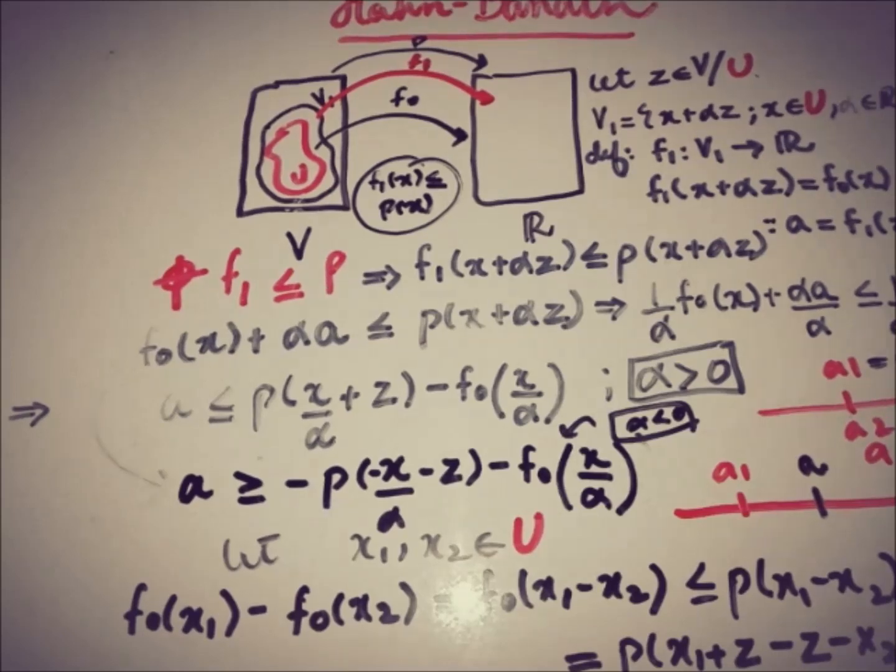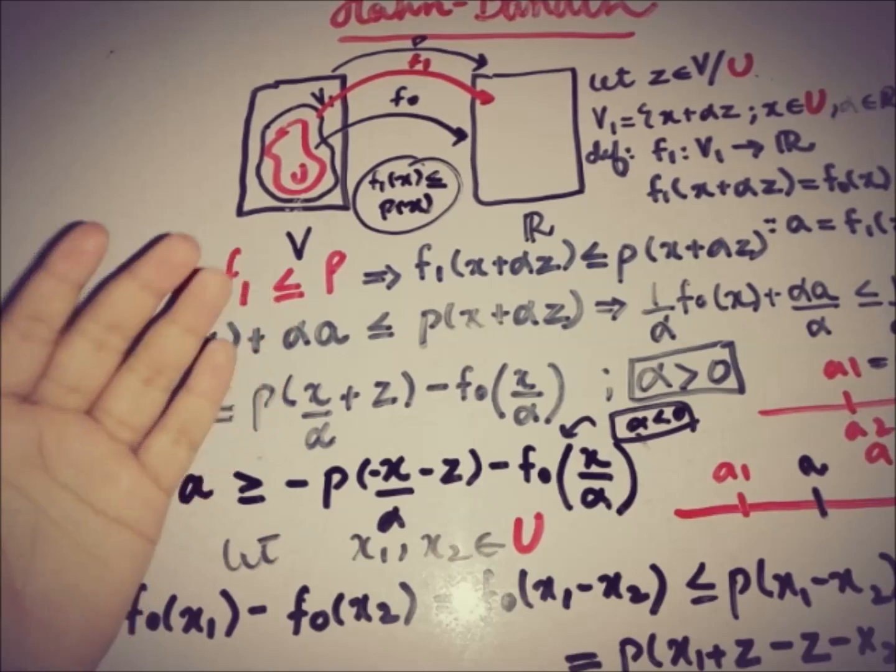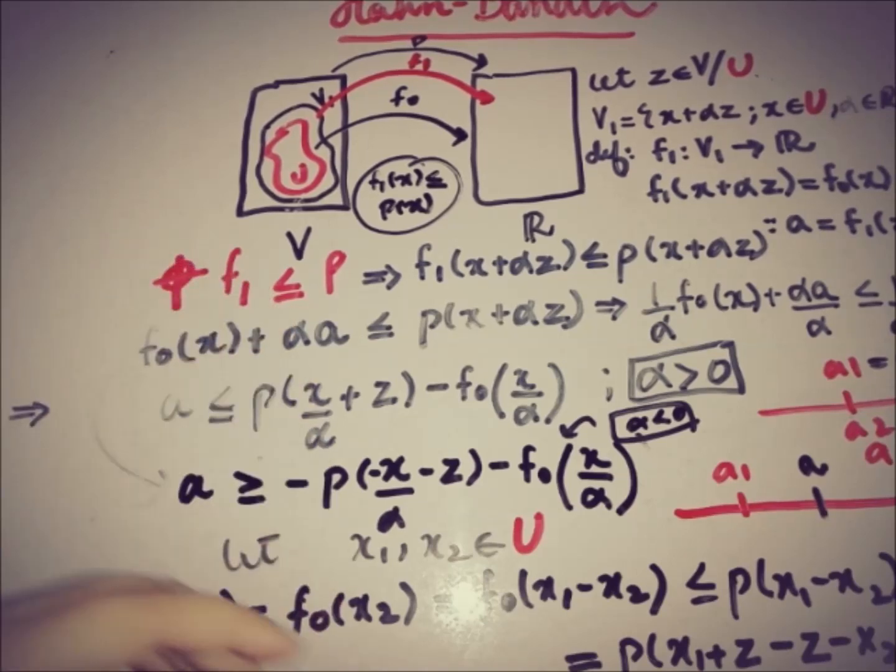So today we will discuss the case in which we will assume that there are countable elements in v. Then what will be our technique to cover up that space v in order to prove Hahn-Banach theorem?